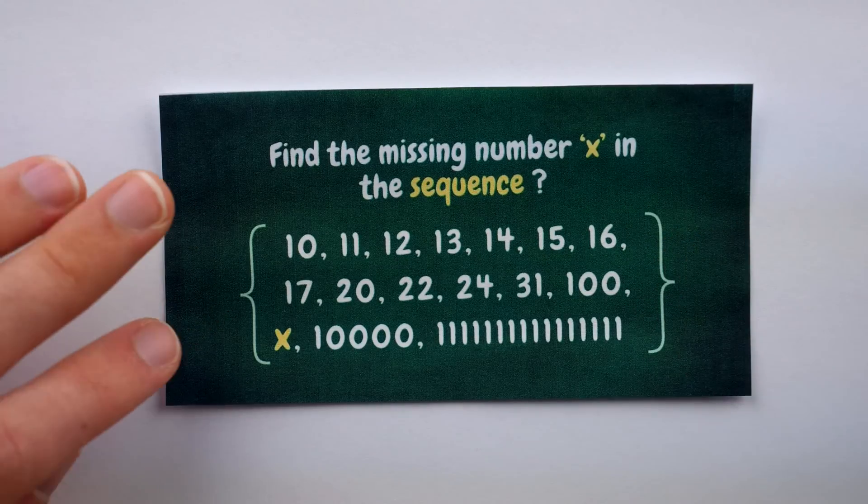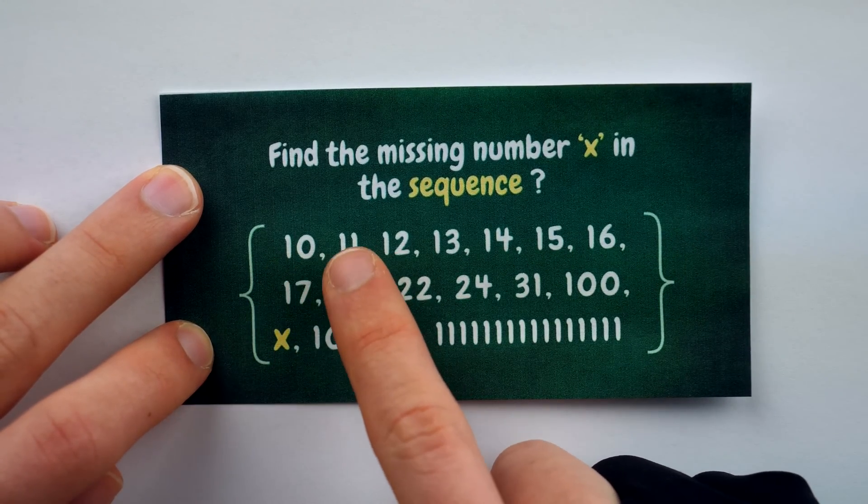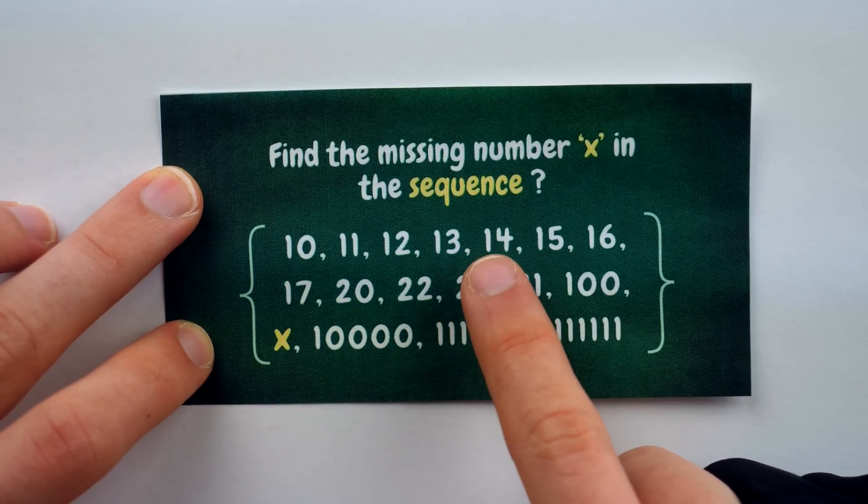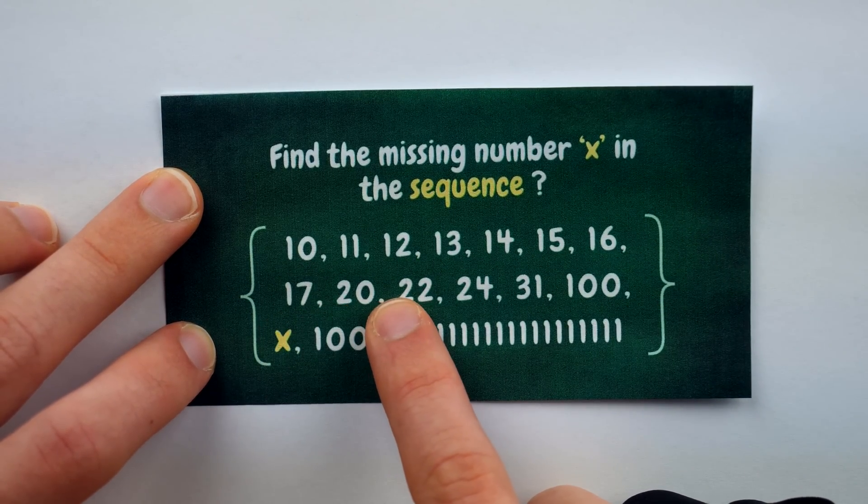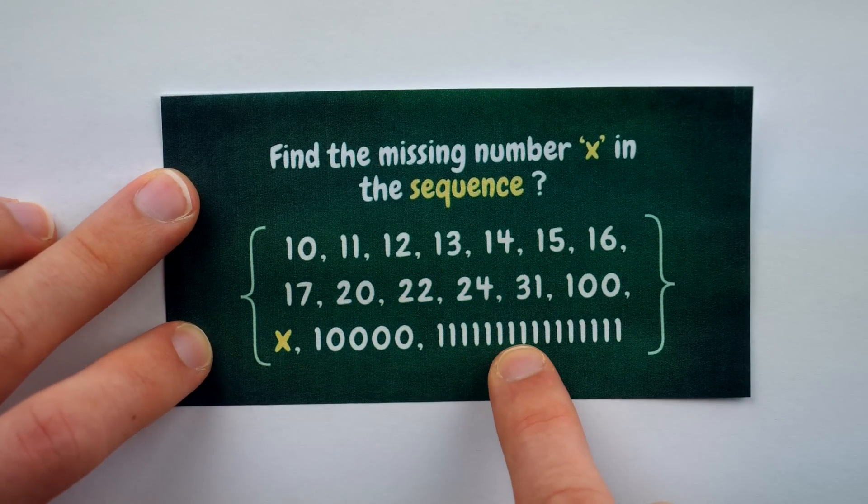For example, we see it's not an arithmetic sequence. The differences start out as 1, the terms are going up 1, but then that pattern breaks. It starts going up by 3, and then 2, and then what the heck's going on after that?